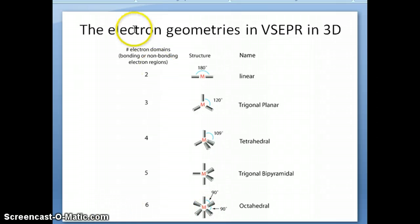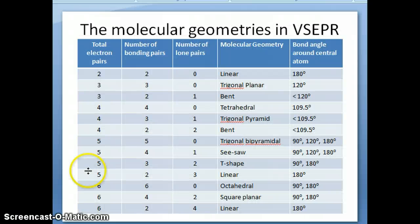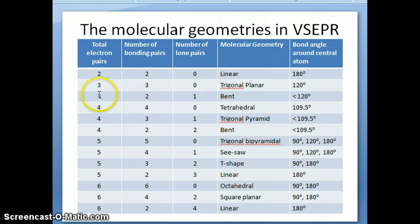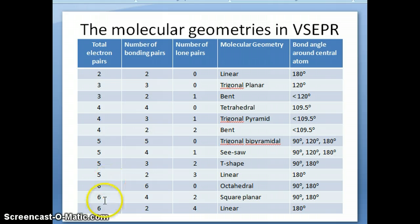The electron geometry is just the first step in using VSEPR. The second and perhaps more important step is the molecular geometry, and there are a lot more categories here. Each of the electron geometries — linear, trigonal planar, tetrahedral, trigonal bipyramidal, and octahedral, corresponding to two, three, four, five, and six total electron pairs — each one represents the total number of electron pairs around the central atom.